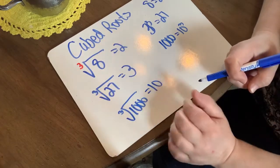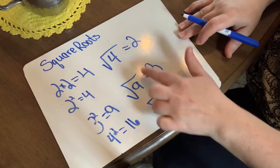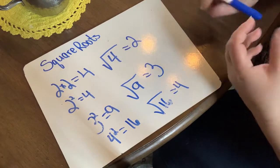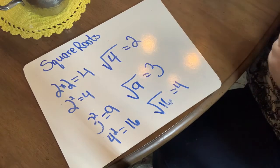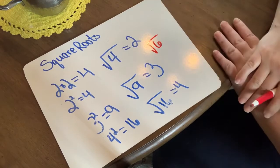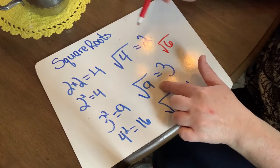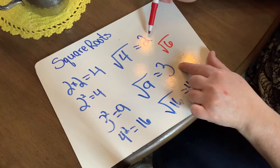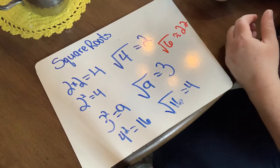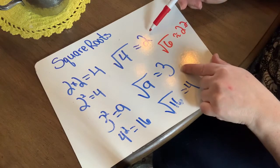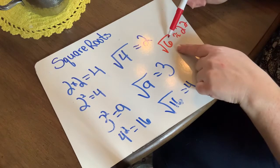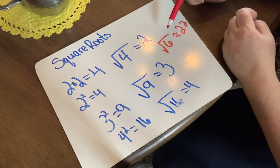The numbers inside my root houses so far are all perfect roots — the ones inside my square root houses are all perfect squares. If I have a number that is not a perfect square or not a perfect cube, then we're going to estimate. For example, the square root of 6: 6 is between 4 and 9, so my answer is going to be between 2 and 3. I can say it's approximately 2.2 or 2.3. Since 6 is closer to 4, the answer is closer to 2 than to 3. When the number is not a perfect square, we estimate what two whole numbers it falls between.